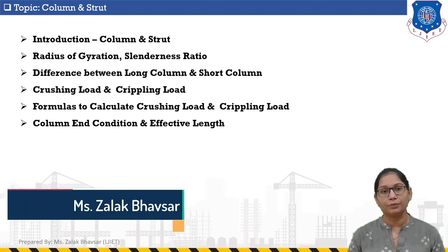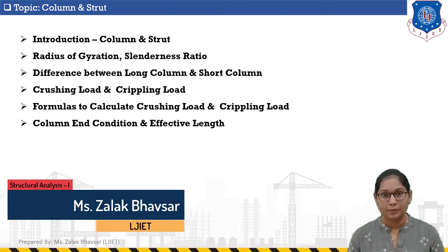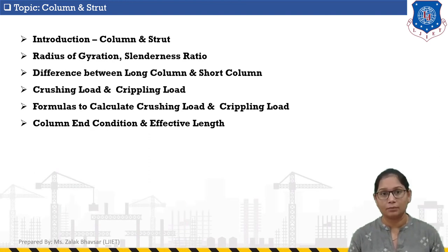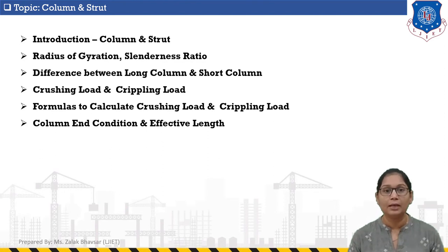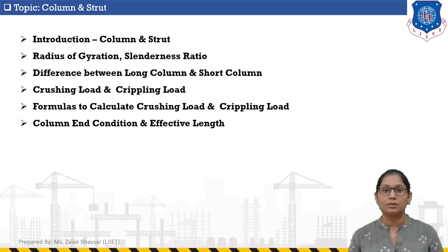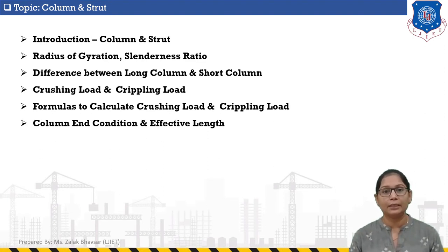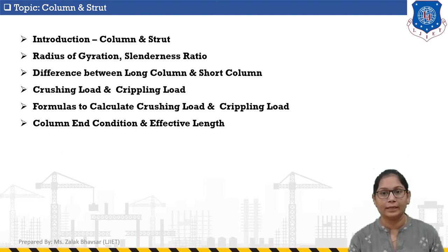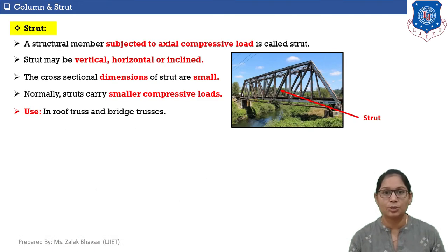In this session we will discuss column and strut. We start with an introduction of column and strut, then discuss important terminologies: radius of gyration and slenderness ratio. After that we will discuss the difference between long column and short column, crushing load and crippling load, formulas to calculate them, and effective length of the column under various conditions.